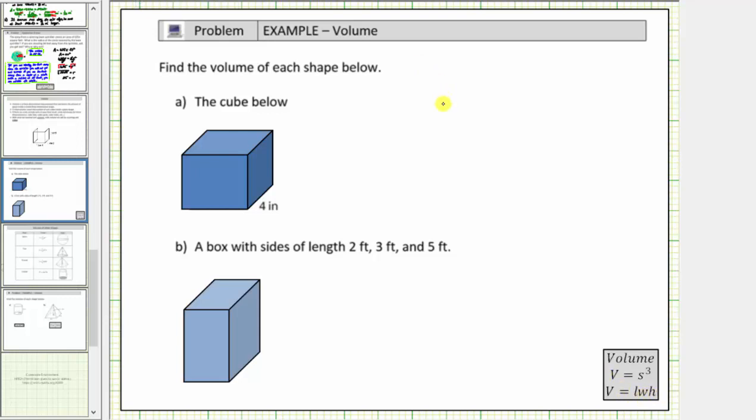So using the volume formula v equals s cubed, s is equal to four inches, and therefore the volume v equals the cube of four, which is equal to four times four times four, which equals sixty-four. The units would be cubic inches. I'll write cubic inches by raising the unit of inches to the third power.